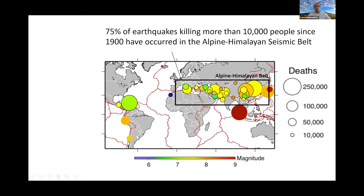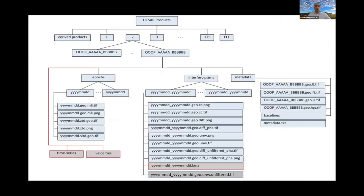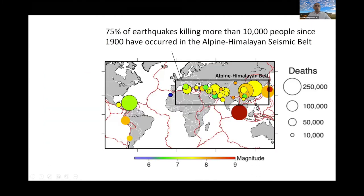Our goal is to process all the frames that lie in the tectonic zones, particularly the Alpine-Himalayan belt plus the volcanic frames. As you can see in this figure, more than 75% of the earthquakes in the past century have occurred in this belt, and lots of damages and casualties have been reported. The size of the circles shows the number of people who died. That is why we consider this one of our priority regions. Processing all those frames will allow us to have a better understanding of tectonic and volcanic activities within this region.